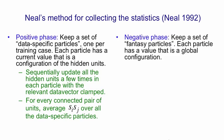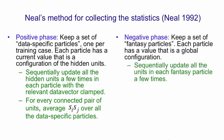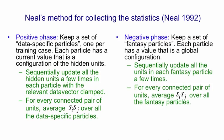In the negative phase, you keep a set of fantasy particles — these are global configurations. After each weight update, you sequentially update all the units in each fantasy particle a few times; now you're updating the visible units as well. And for every connected pair of units, you average SiSj over all the fantasy particles.